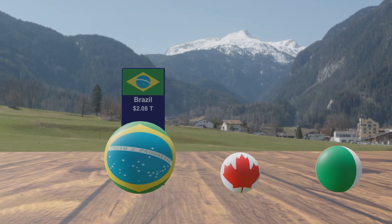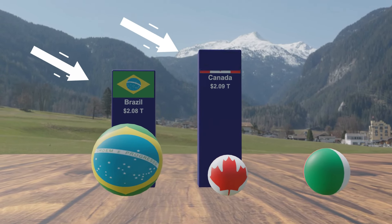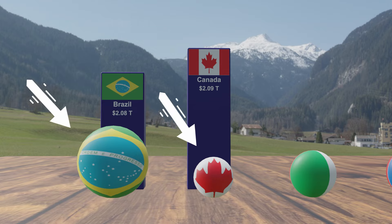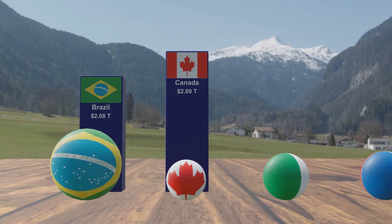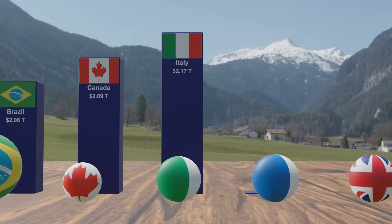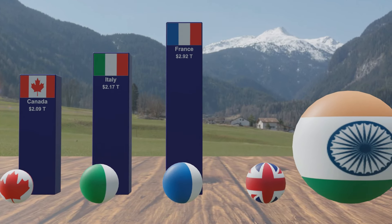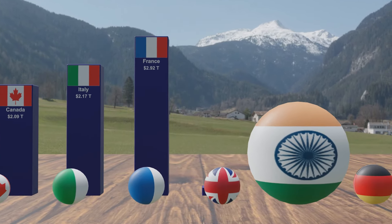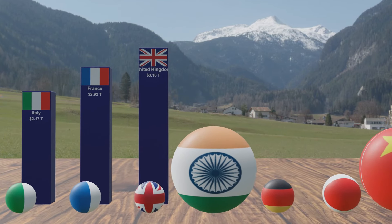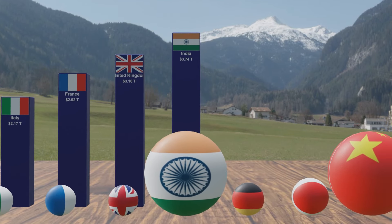Each bar in this animation represents the GDP of a specific country, whereas the corresponding sphere denotes its population size. By comparing them visually, one can grasp a better understanding of the relationship between each country's economic power and its population. The information displayed is based on April 2023 estimates.